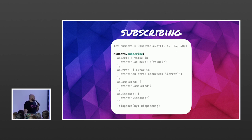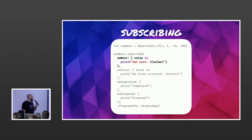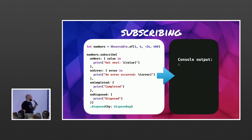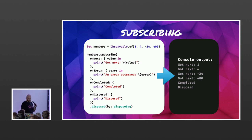I subscribe to that stream of numbers and provide an onNext closure. In this closure I can provide my own actions for every value emitted. I also provide handlers for error and completed events. So in the console, we'll print 'got next 1', then 4, then -24, then 400, then the stream completes and is disposed, which is expected. But we skipped one very important line — 'disposed by disposeBag'.